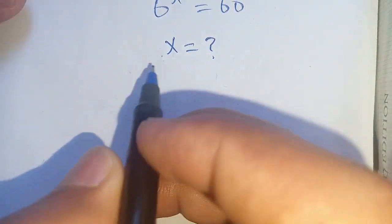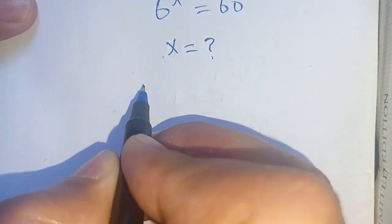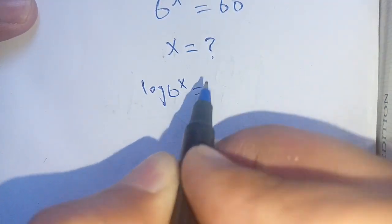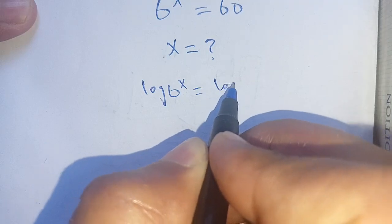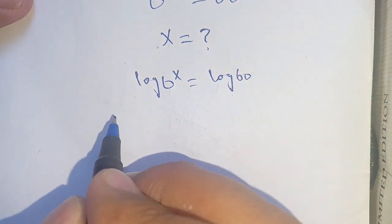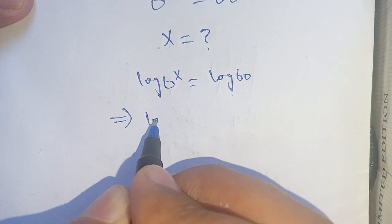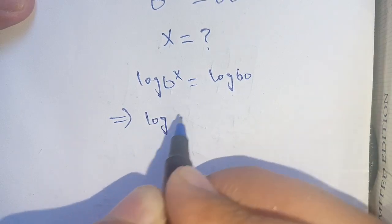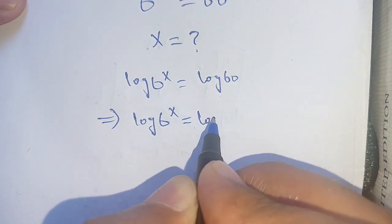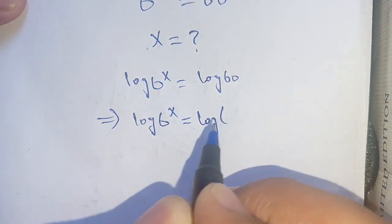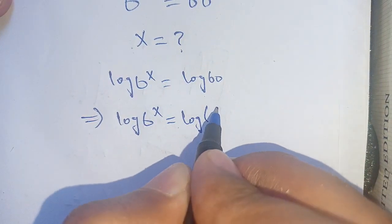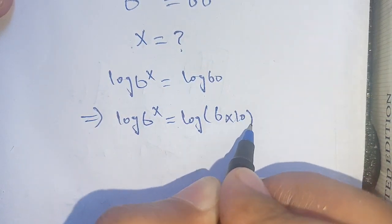Now, on taking log on both sides we get log of 6 power x is equal to log of 60. In the next step, 60 can be broken down in terms of 10 — we write it as 6 times 10.